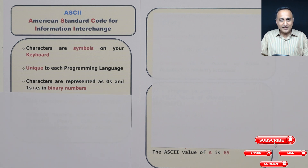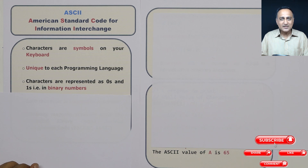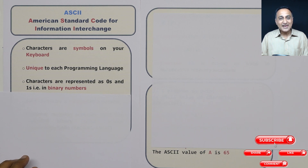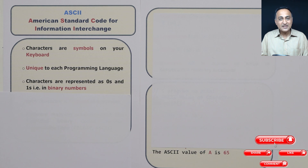If you look at a character on the keyboard, for you and me it is 1, 2, 3, A, question mark, equal to, plus, minus, flower bracket, round bracket, and so on. But internally, every character is represented in terms of zeros and ones — that means it is represented in binary numbers. There are various ways of representing these characters. For example, in one system, the letter A may be represented by decimal number 65, while in another system, capital A may be represented by decimal number 100. So the same character can be represented internally using different formats.